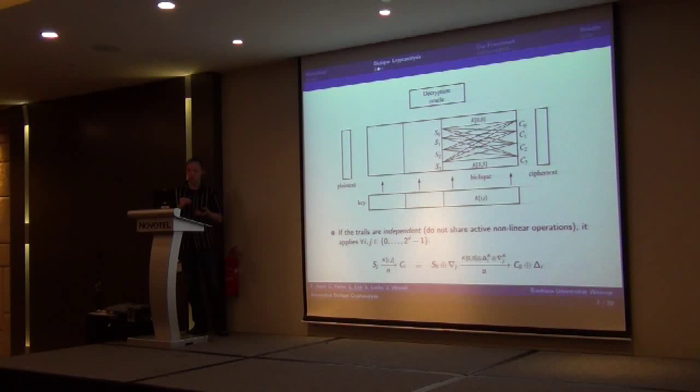they could test a set of 2 to the 2d keys with only 2 times 2 to the d computations, which results in a significant computational advantage for the sub-cipher covered here.